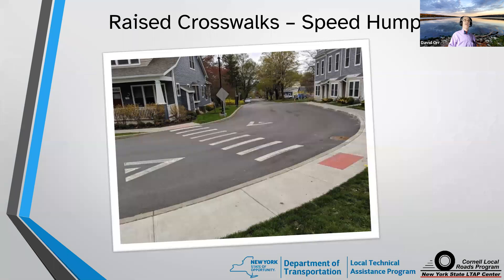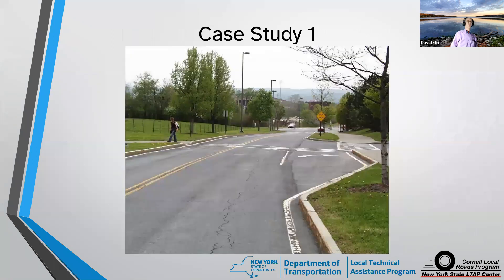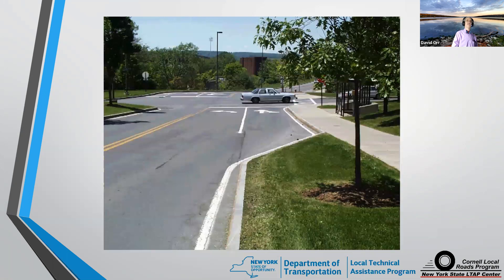There are other things we can do: raised crosswalks, speed humps, all kinds of traffic calming at intersections. But think about human factors. I want to spend a couple of minutes on some case studies to get you thinking about what we talked about. Our first case study: you're coming down this roadway, passing a stop-ahead sign, and you come to this intersection — it's an all-way stop. What would you do here differently? Suggestions include a signal light, realign the roadway, and clear the tree — which was a major issue because you couldn't see the stop sign.